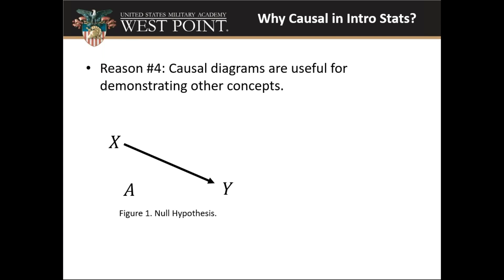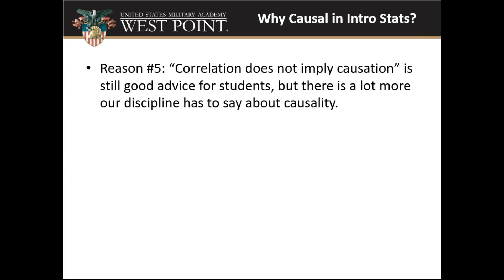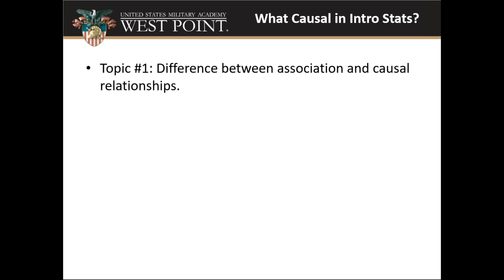For example, in a randomization test you'd be breaking the link between your treatment and any confounders, and also breaking the link between treatment and outcome in the null case. You could also illustrate a randomized controlled experiment — when you randomize treatment levels, you break the link between confounders and the treatment variable. Reason five: 'correlation does not imply causation' is still really good advice, but our discipline has a whole lot more to say about causal inference above and beyond just that phrase.